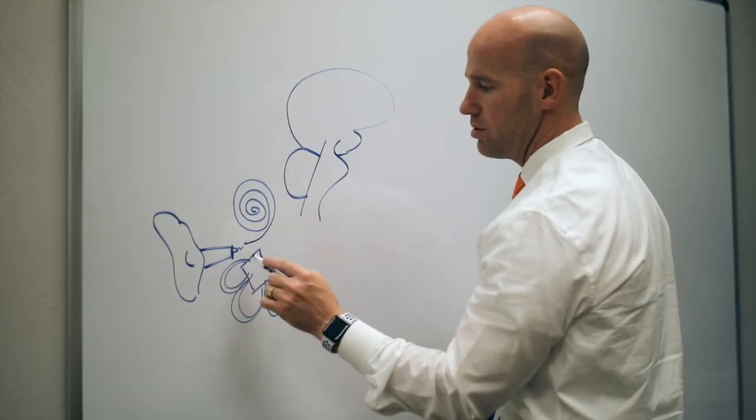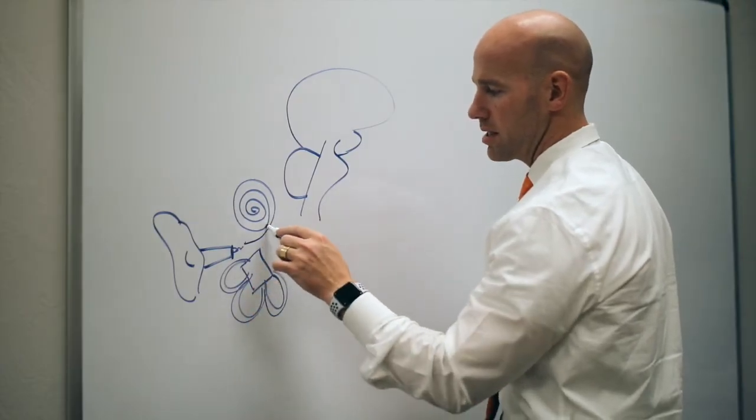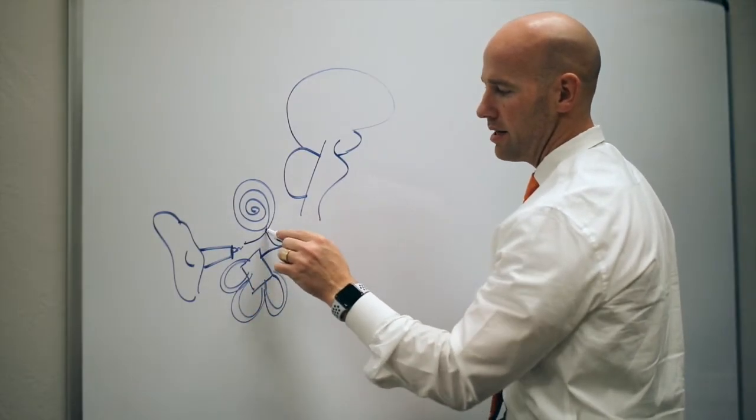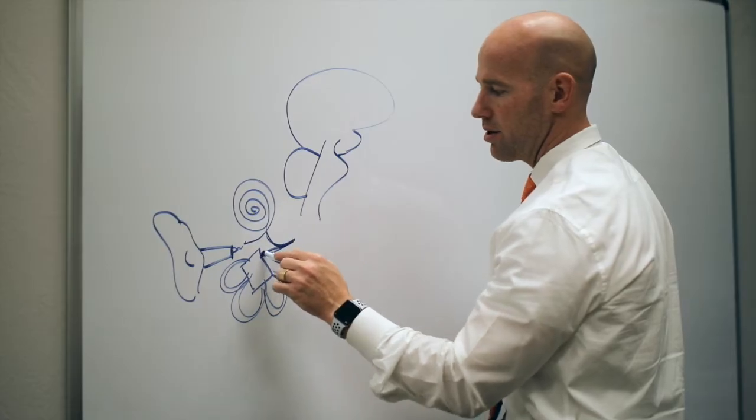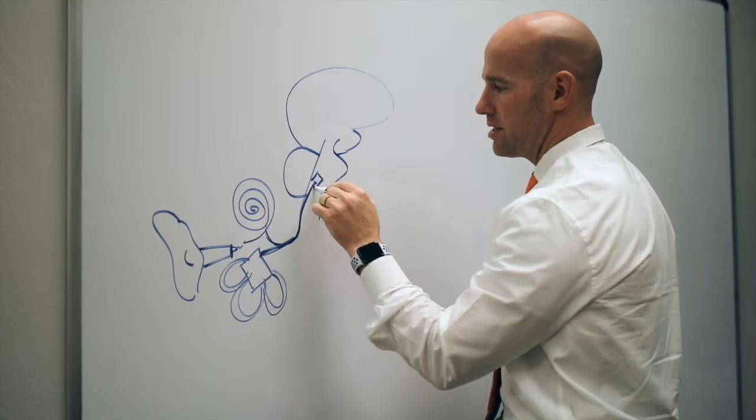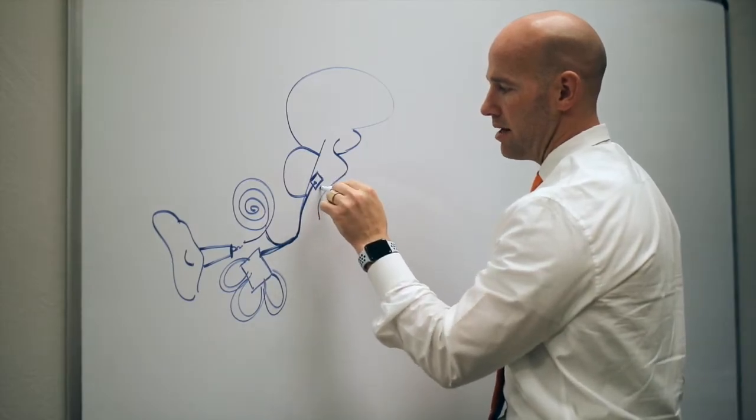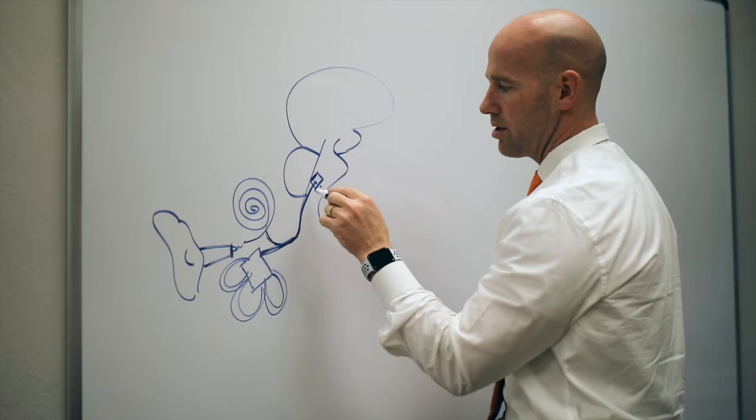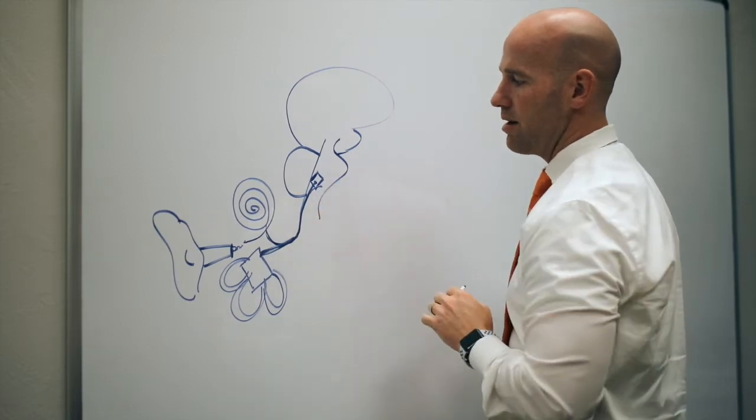These two systems come together creating the vestibular cochlear nerve. They go in through the brainstem and locate here on the vestibular nucleus where the cochlear nerve branches off and sound travels.